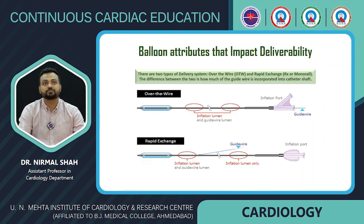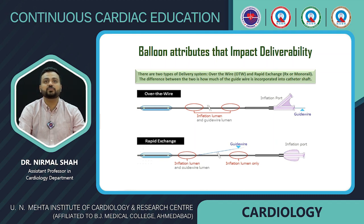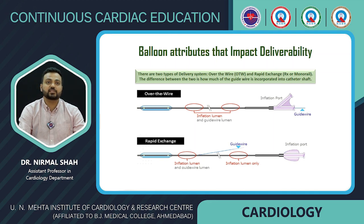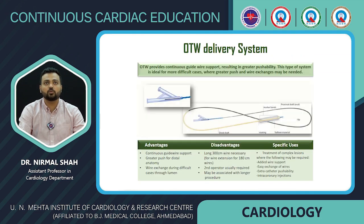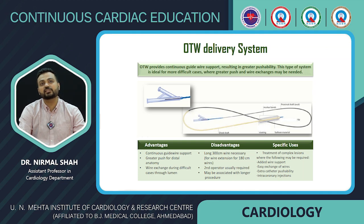There are basically two types of balloon delivery systems: over-the-wire and rapid exchange. The difference is how much of the guide wire is incorporated into the catheter shaft. Over-the-wire balloons have guide wire support throughout the entire catheter length, whereas rapid exchange catheters only incorporate the wire for a short length before it exits. The over-the-wire system provides continuous guide wire support resulting in greater pushability and is ideal for difficult cases.